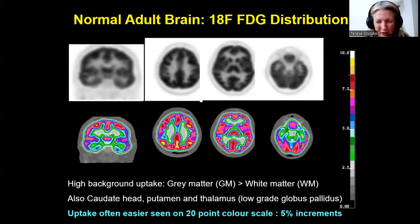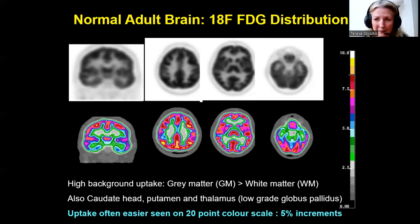We've already learned about displaying FDG PET brain on a grayscale. It can also be displayed in a color scale, where each increment is a 20-point scale, so each increment is a 5% change. Sometimes subtle differences are easier to see on the color scale than on the grayscale image — both are correct. We see uptake within the grey matter, basal ganglia, thalamus — so caudate head, putamen and thalamus — as well as background cortical uptake.